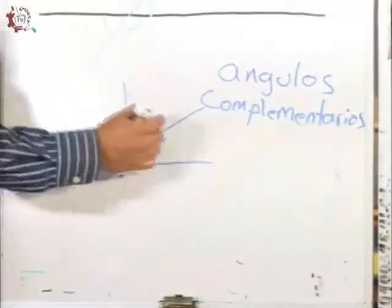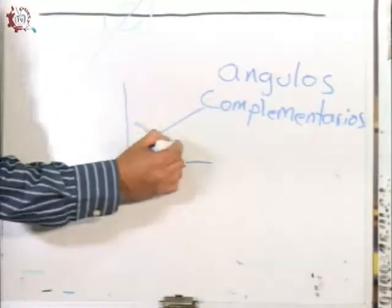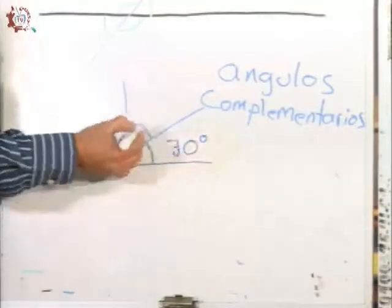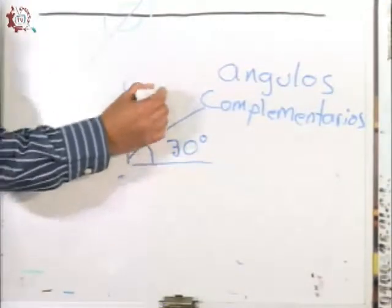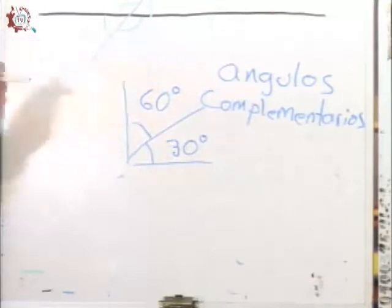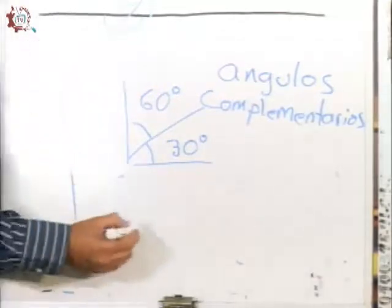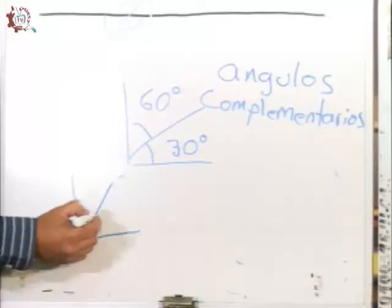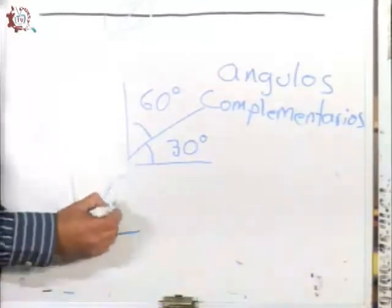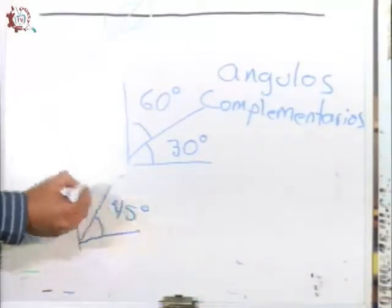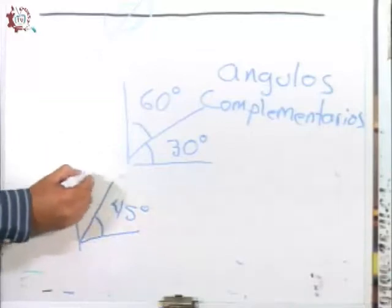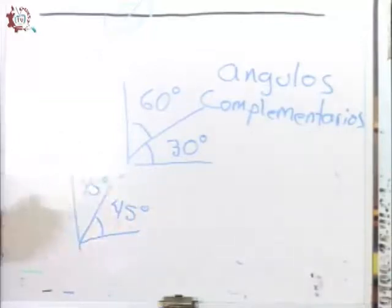Si este ángulo mide 30 grados, su ángulo complementario es de 60 grados. Otro ejemplo: si este ángulo es de 45 grados, su complementario es de 45 grados.